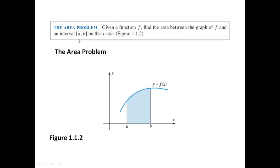Next, the area problem. Given a function f, find the area between the graph of f and a closed interval [a, b] on the x-axis. Here this is our graph y = f(x), this is our interval a and b, and we have to find the area under this curve — that is, this shaded area.